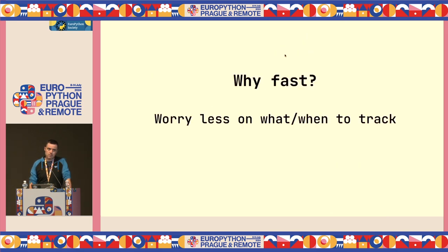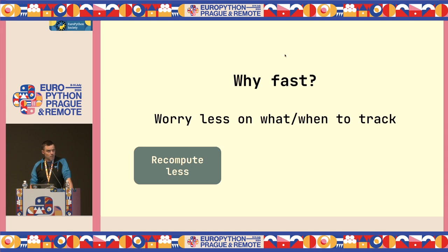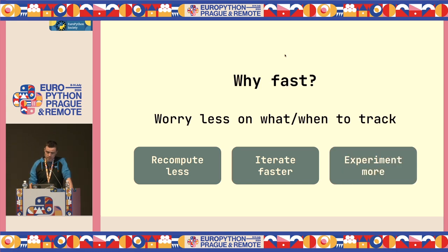The topic of this talk is about why it is important to experiment in an efficient way. Once you are able to track really fast, you don't care as much about performance overhead, so you're not selecting what you might want to track or not. You just more freely relax and start tracking more, which means potentially you are repeating less computation. You can iterate faster, experiment more, and the experience for the developer or researcher also improves.